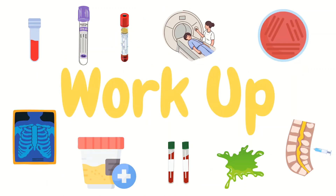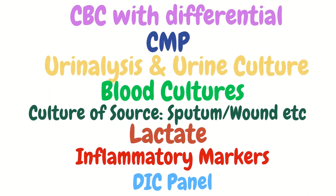The most likely sources of infection for septic patients are from the lungs, the abdomen, and the urinary system. The CBC with differential will let us know the white count, what type of white blood cells are elevated, and whether a left shift is present. The CMP will let us assess organ dysfunction and derangements as a result of the infection. The urinalysis will allow us to see if there is an infection in the urine, and the urine culture will help figure out which antibiotic is most effective.